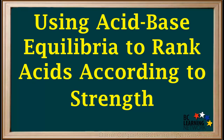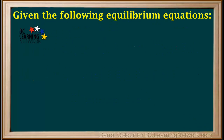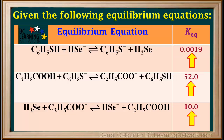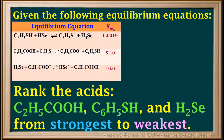We'll show you how we can use the principles of acid-base equilibrium to rank acids according to strength. We are given three acid-base equilibrium equations shown in this table, and the values for the equilibrium constants, KEQ. Given this information, we're asked to rank the acids C2H5COOH, C6H5SH, and H2SE from strongest to weakest.